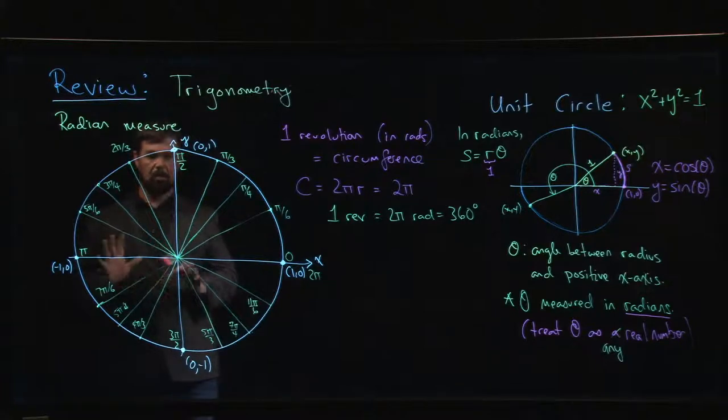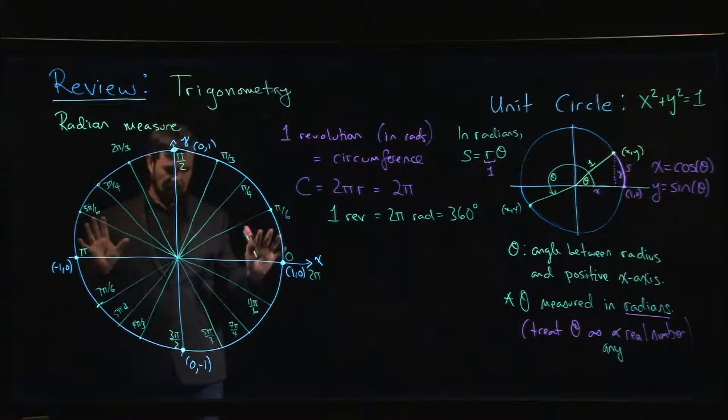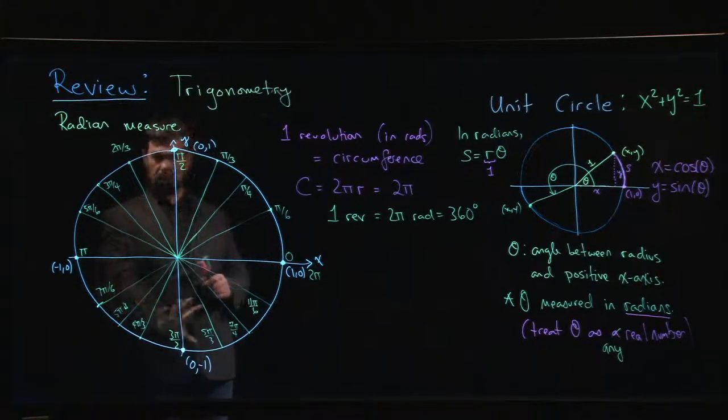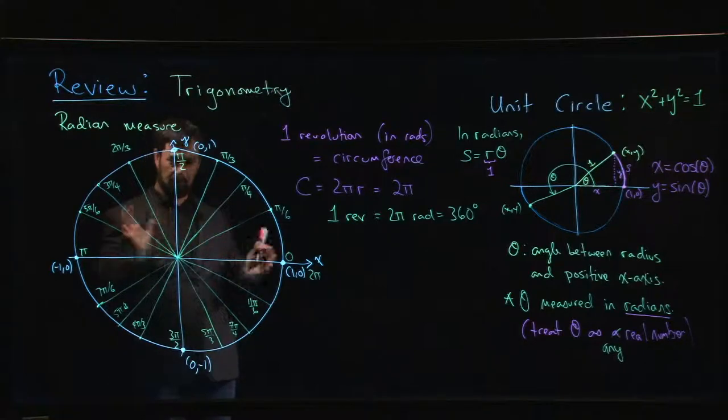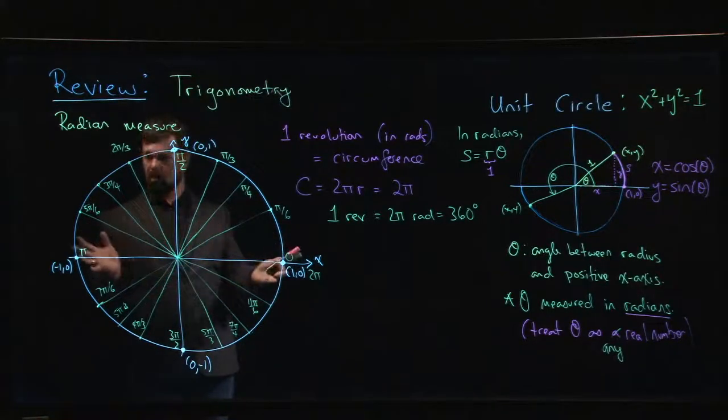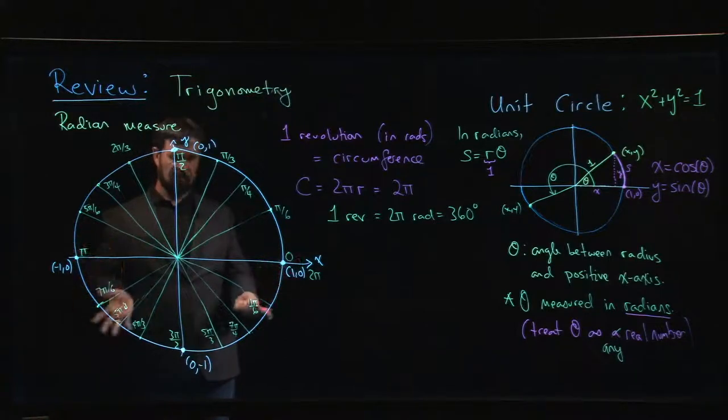So these are the basic ideas that you use. You don't have to memorize the whole circle. You don't even have to remember the cast rule or anything like that you might have learned. As long as you remember in each of the four quadrants which coordinates are positive, which are negative, and you remember these values, you can work things out for any of these points on the unit circle.